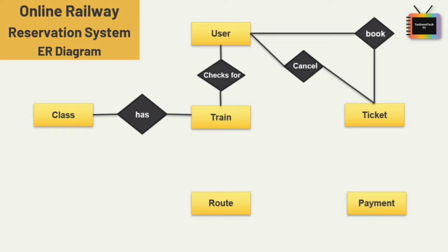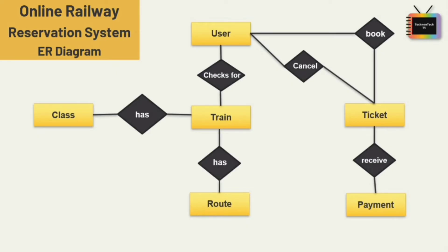A train has different classes like general, sleeper, two-tier, etc., so I am adding a 'has' relationship between train and class. There should also be a relationship between ticket and payment, so I am adding the relation 'receive' between ticket and payment. The relationship between train and route will be that a train has different routes.